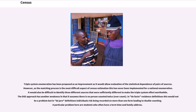It would also be difficult to identify three different sources that were sufficiently different to make the triple system effort worthwhile. The DSE approach has another weakness in that it assumes there is no person counted twice — over-count. In de facto residence definitions this would not be a problem, but in de jure definitions individuals risk being recorded on more than one form, leading to double counting. A particular problem here are students who often have a term-time and a family address.